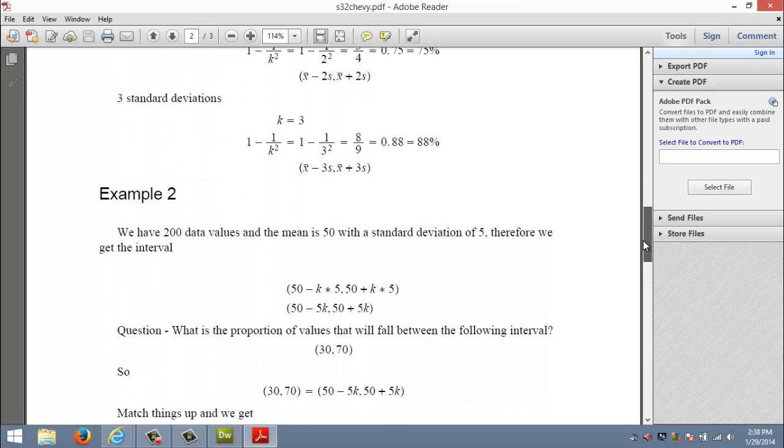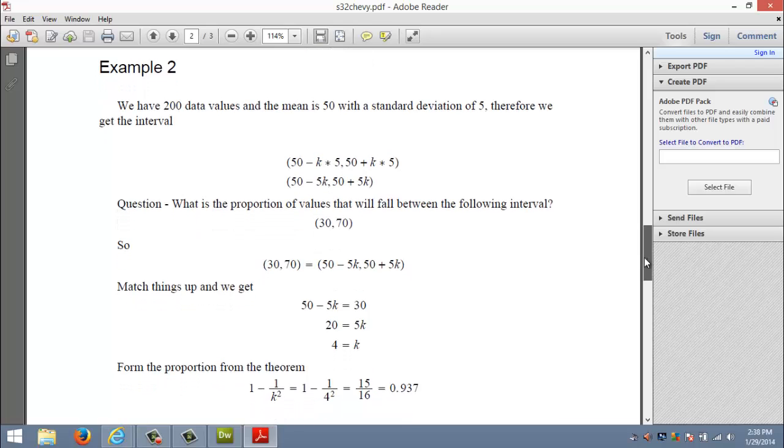Another example. Suppose I've got 200 pieces of data, 200 numbers, and it's already been calculated that the mean of the data is 50 and it has a standard deviation of 5. If I do this for my k intervals it would be centered at 50, so I have 50 plus 5k and 50 minus 5k.